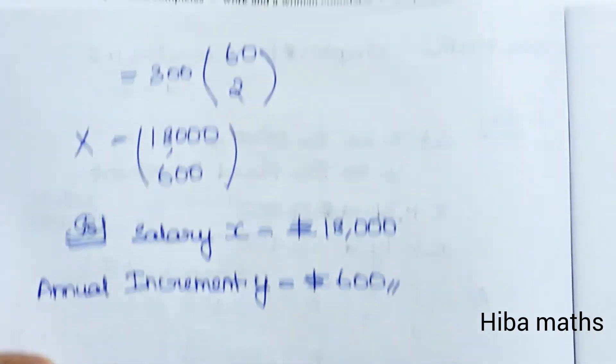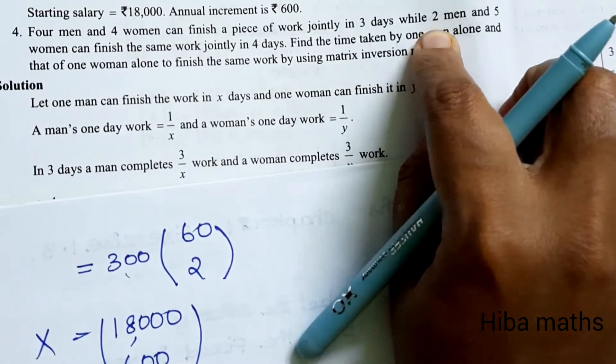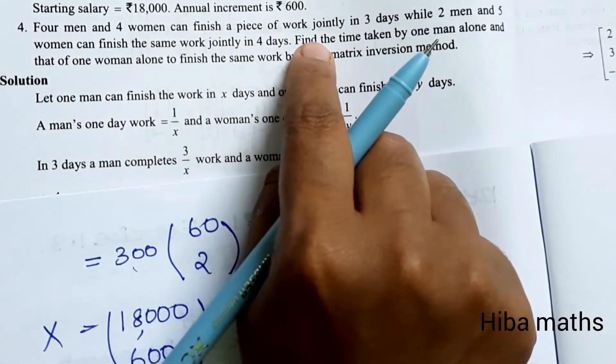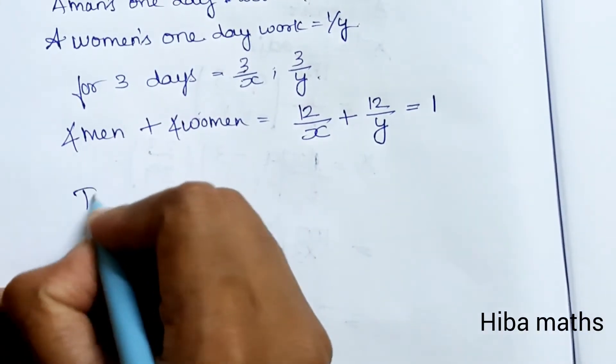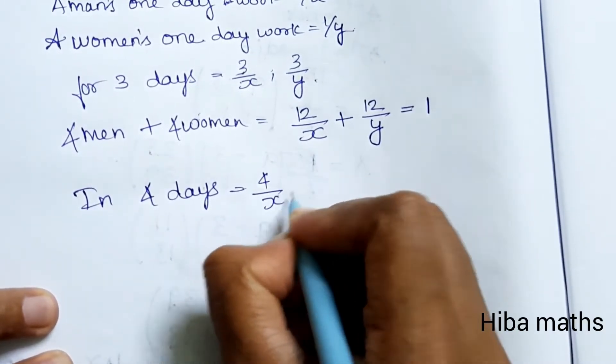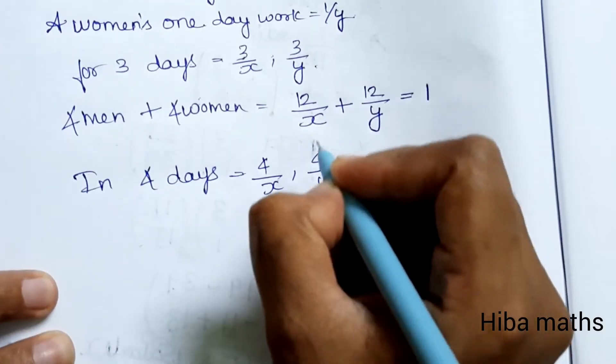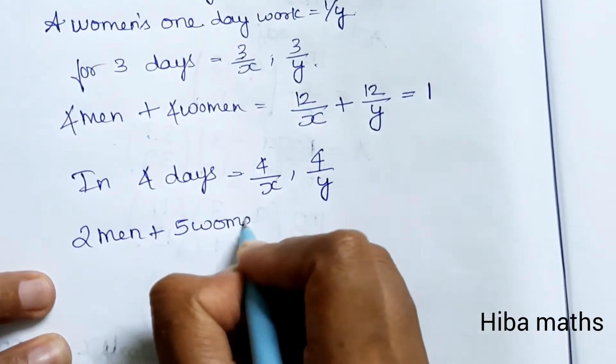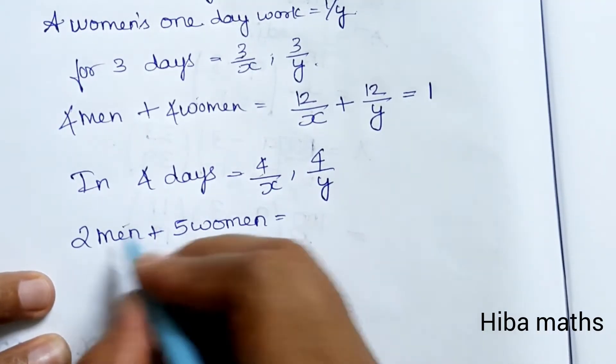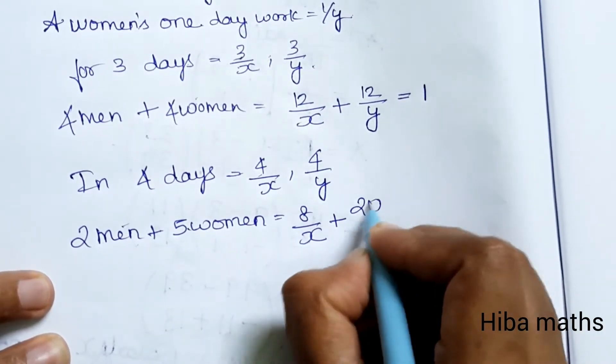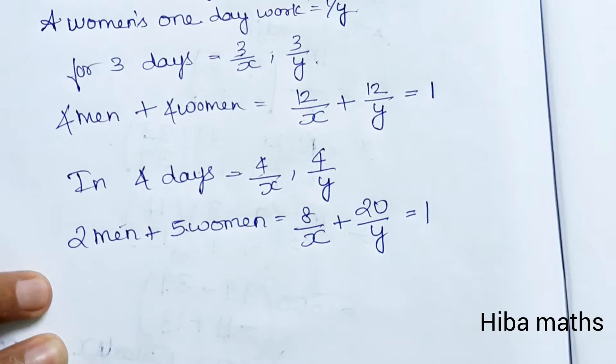Second statement: 2 men and 5 women can finish the same work jointly in 4 days. So in 4 days, 2 times 4 equals 8/x plus 5 times 4 equals 20/y equals 1.